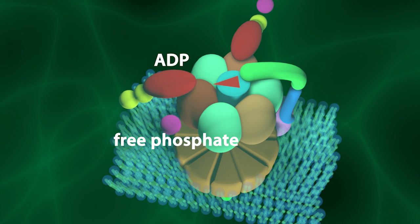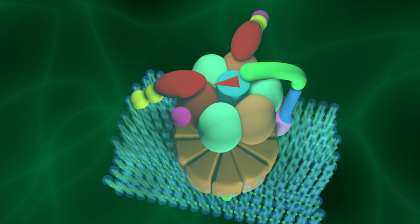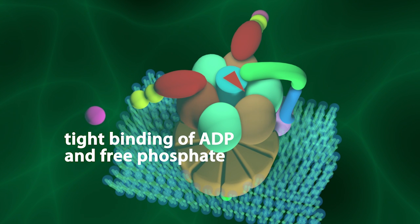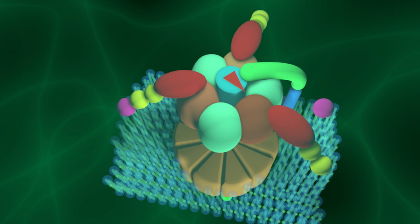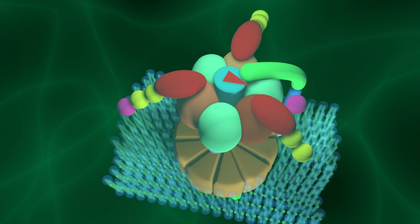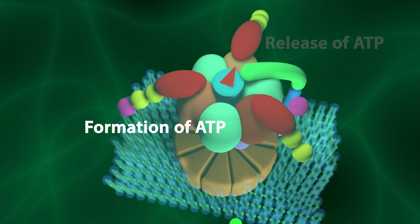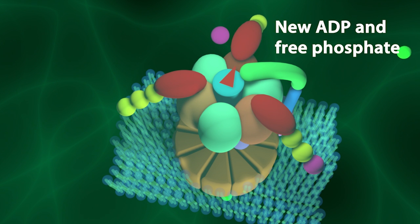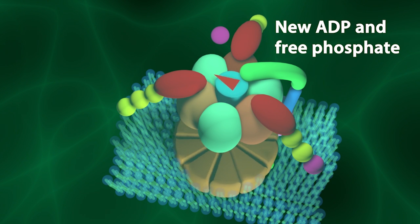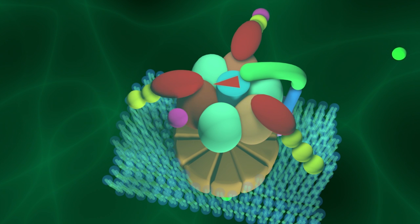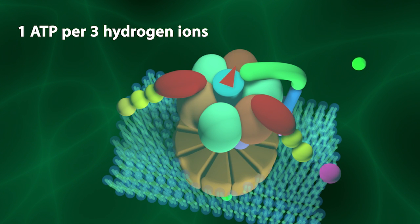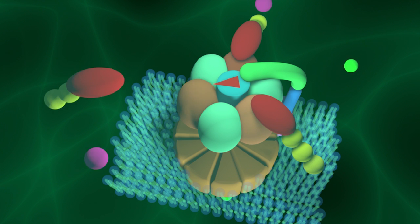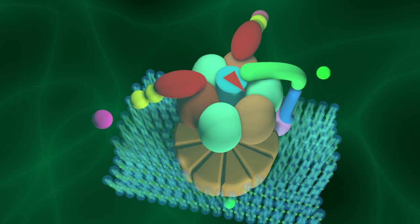The next hydrogen ion then causes the rotor-like motor and axle to rotate another 120 degrees, which promotes the tight binding of ADP and free phosphate. The third and last hydrogen ion then causes the rotor-like motor and axle to rotate another 120 degrees, which promotes the formation and release of ATP, after which a new ADP and free phosphate loosely bind to that unoccupied beta subunit. This process continues to produce one ATP for every three hydrogen ions transported from the intermediate space into the matrix. Also, the synthesis of ATP occurs on each of the three beta subunits.